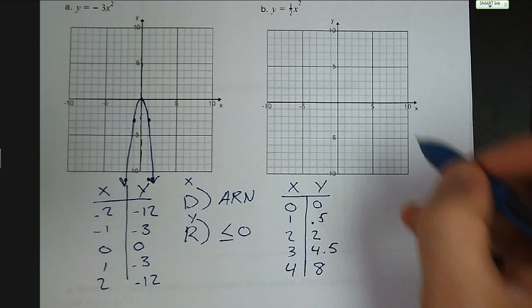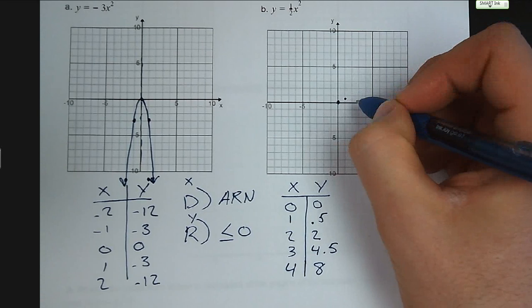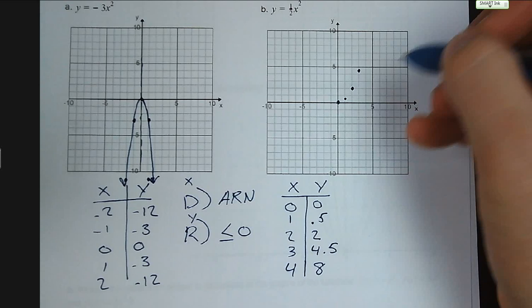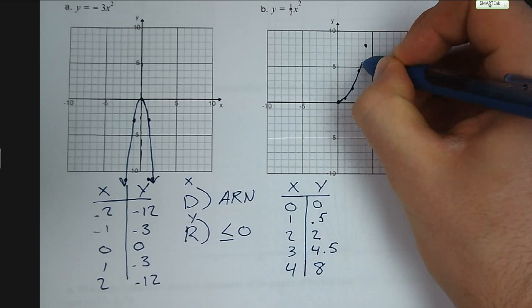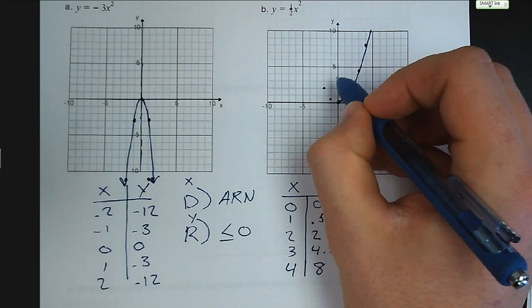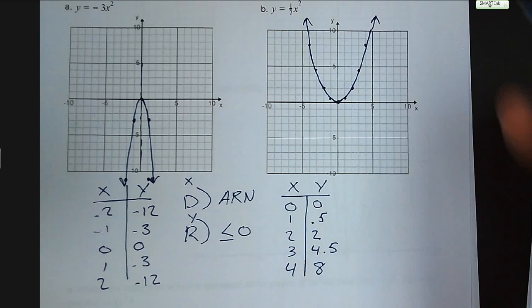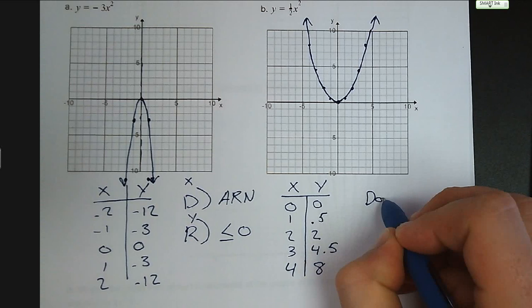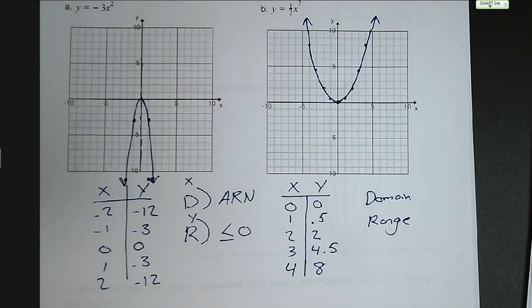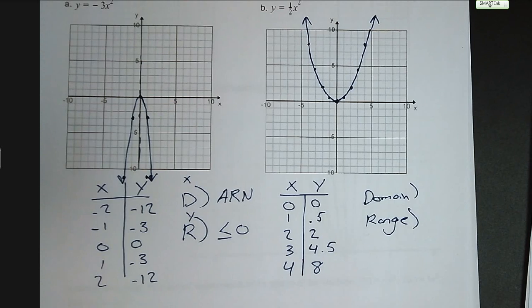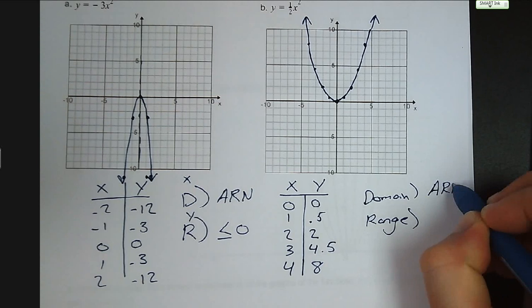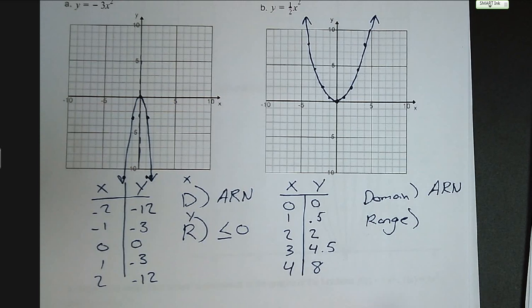There are four points to graph: 0, 0; 1, 0.5; 2, 2; 3, 4.5; and 4, 8. Now we mirror those to the left-hand side of our y-axis, because we know a parabola is symmetrical. In this lesson, all of our functions have their axis of symmetry on the y-axis — this will be a little trickier in future lessons. Our domain is again all real numbers, and our range is greater than or equal to 0.